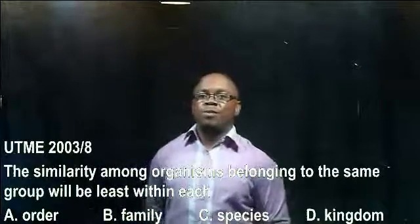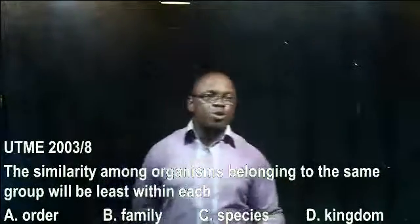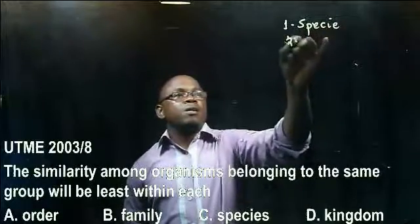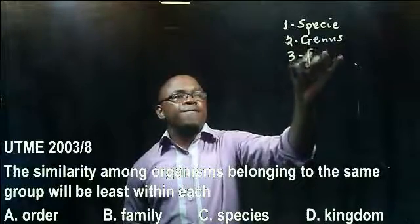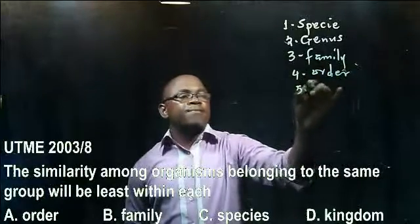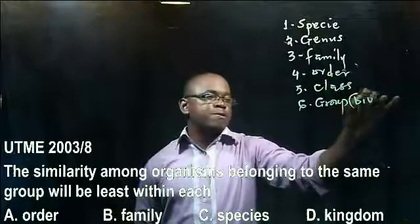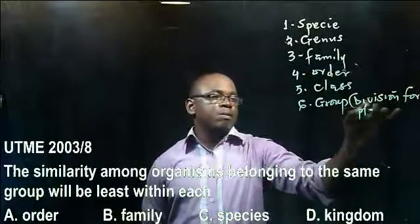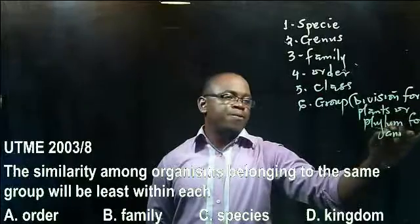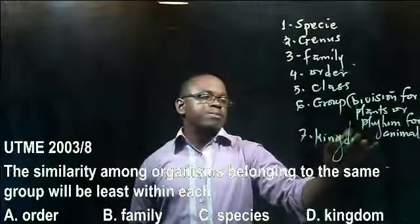In hierarchical classification, we have seven different groups into which organisms can be classified. Starting with the smallest group: 1) species, 2) genus, 3) family, 4) order, 5) class, 6) group — which could be division for plants or phylum for animals — and 7) kingdom.